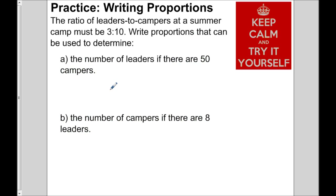Let's practice writing proportions. The ratio of leaders to campers at a summer camp must be 3 to 10 — that's 3 leaders to every 10 campers. Write proportions to determine the number of leaders if there are 50 campers, and the number of campers if there are 8 leaders. Start with a known ratio and make it equal to an unknown. Pause the video, give it a shot, and press play when you're ready.